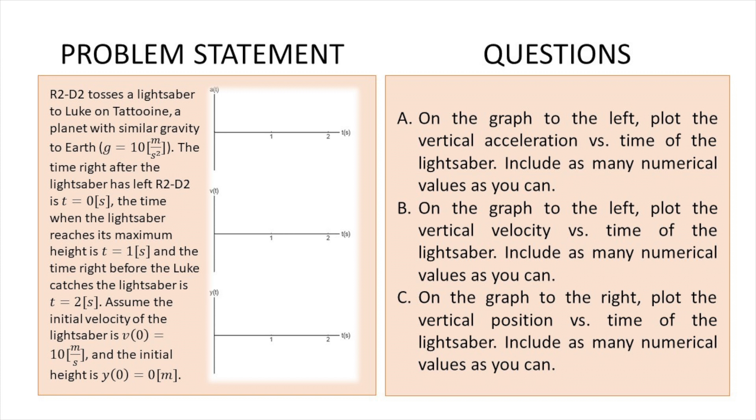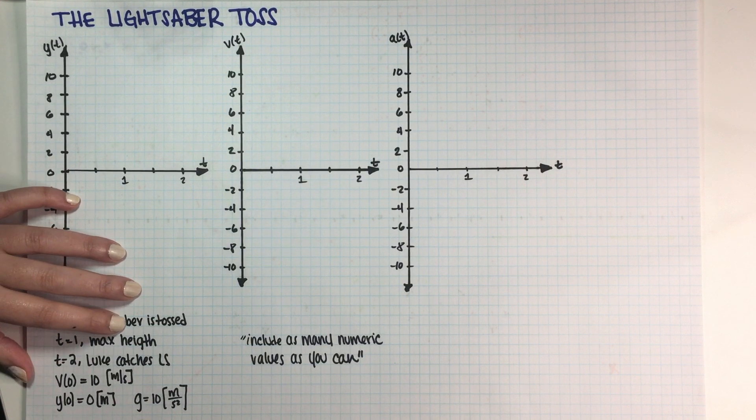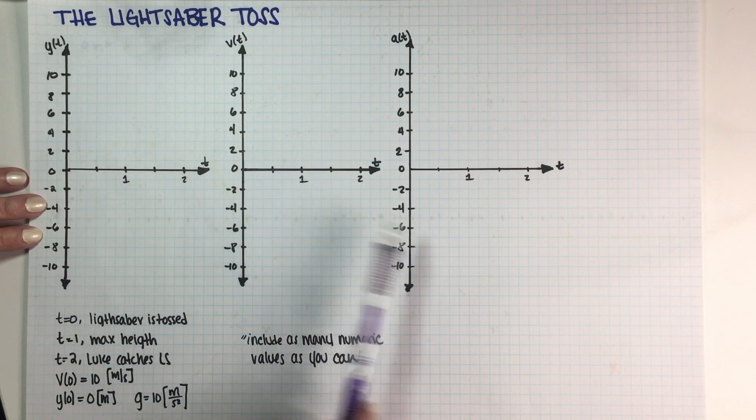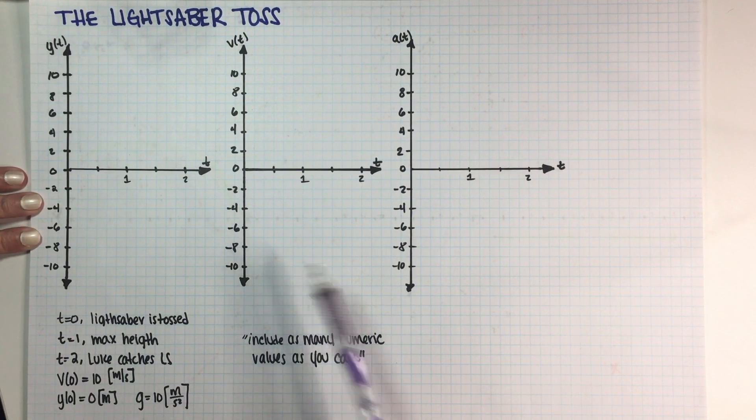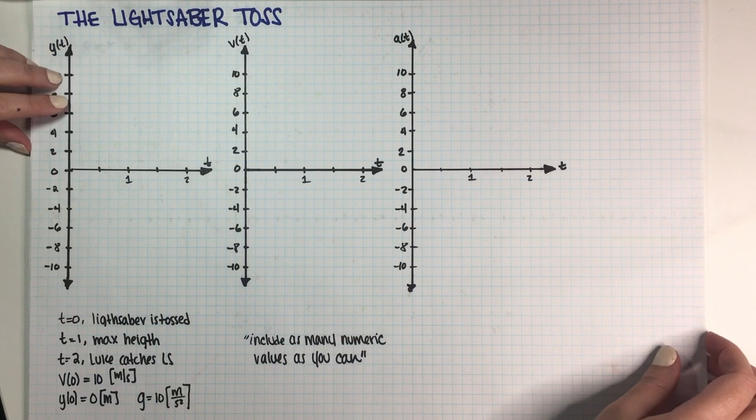Basically the thing that we have to do is plot the three graphs: position, velocity, and acceleration. As you can see I have everything written down here, so I have my three empty graphs and I have all of the relevant information over here. So let's just go ahead and get started.